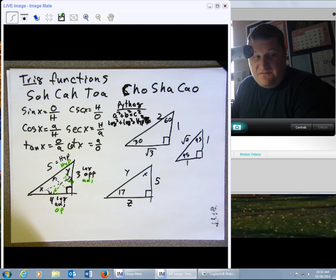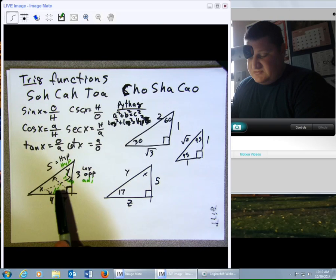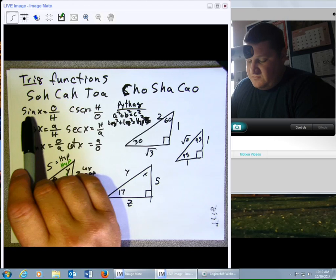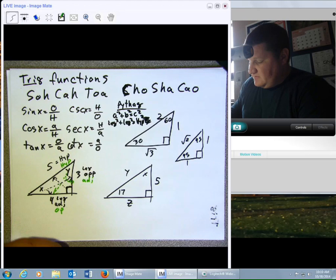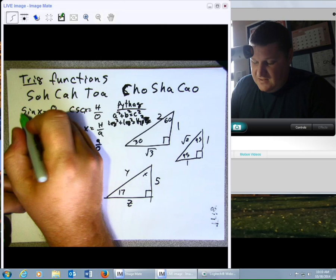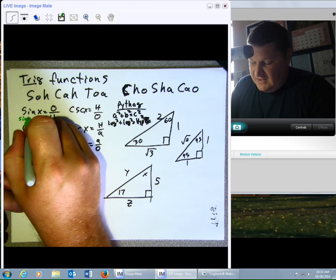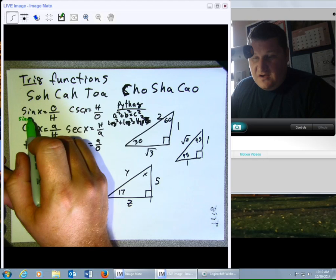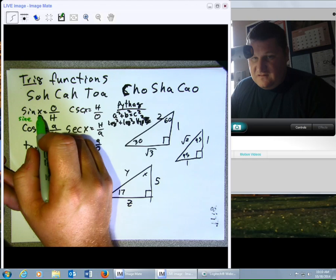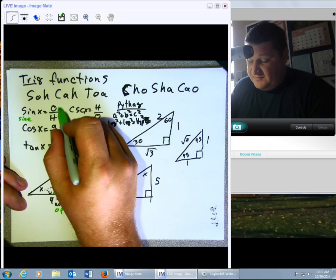Now, we do have these other measurements that we can take off of a right triangle. The first one we call sine. It is spelled S-I-N-E, but we abbreviate it S-I-N, and it's still pronounced sine.